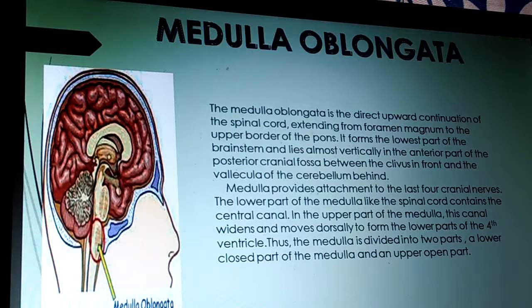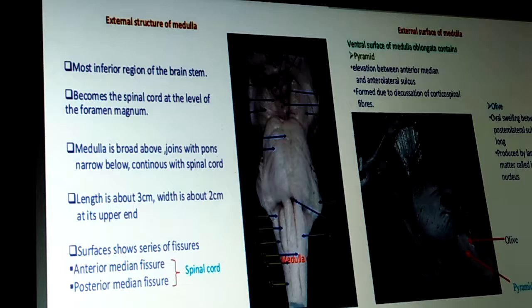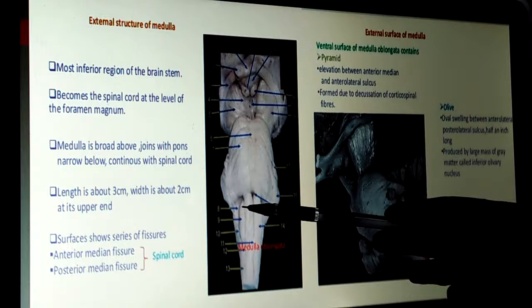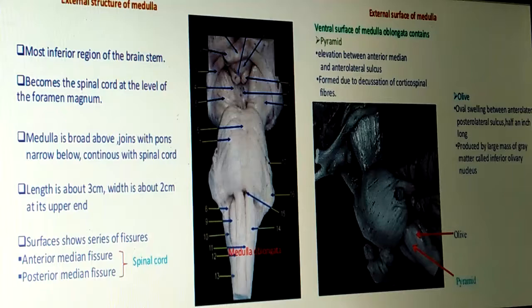In this picture, this is the midbrain, pons, and this one is the medulla oblongata. Regarding external structure of the medulla oblongata — most of the inferior region of the brainstem becomes the spinal cord at the level of the foramen magnum. Length is about 3 cm; width is about 2 cm at the upper end.